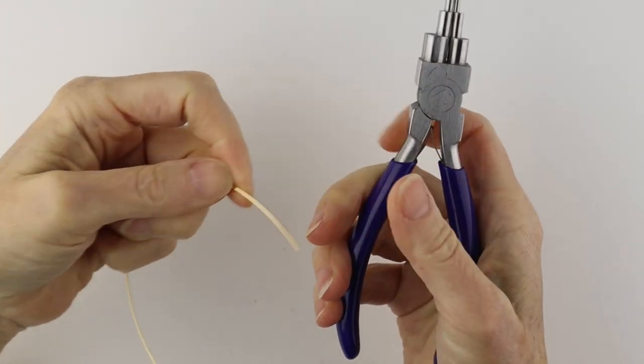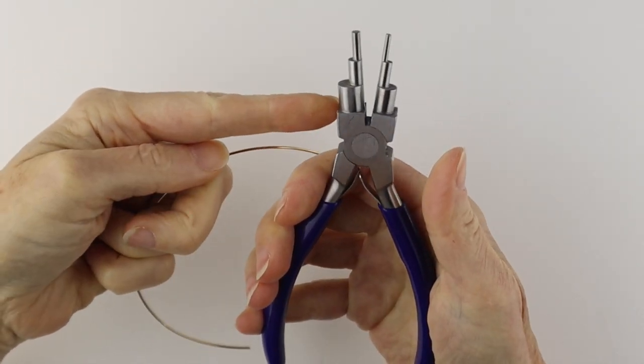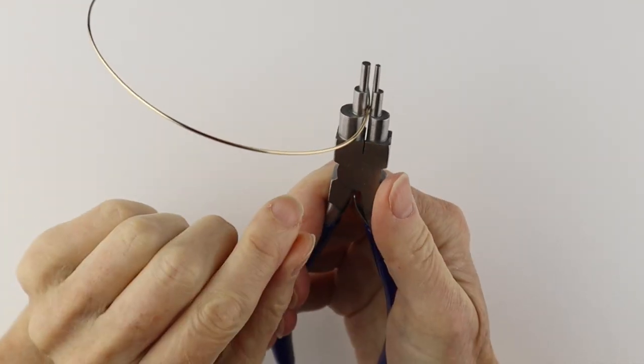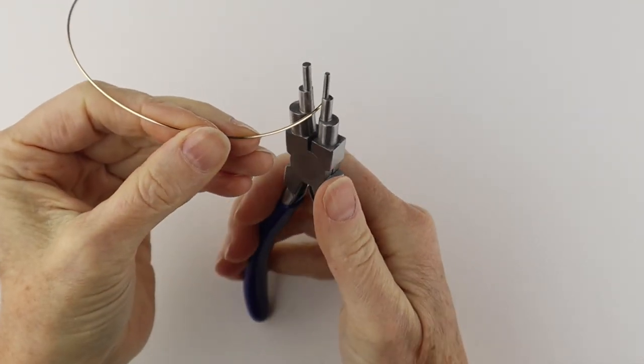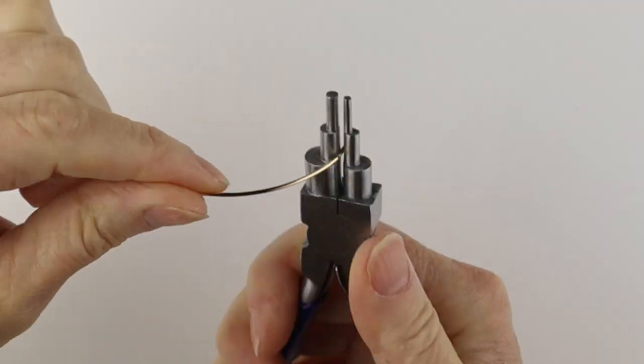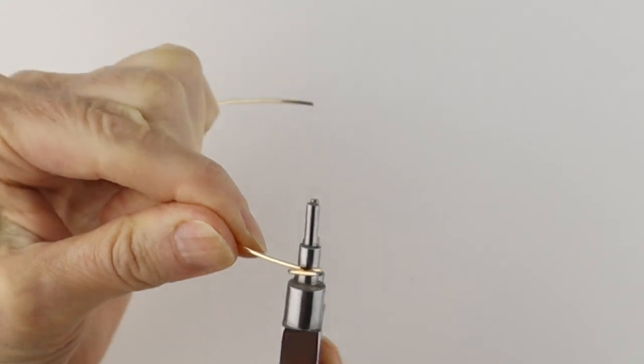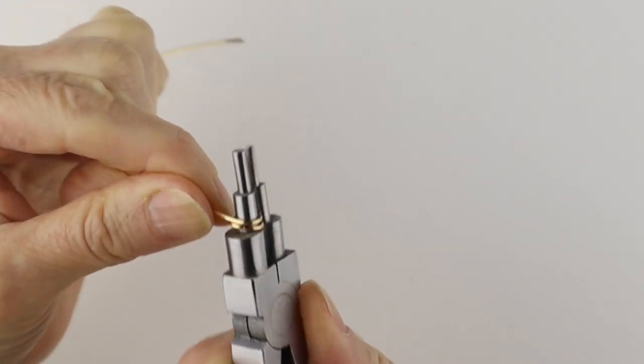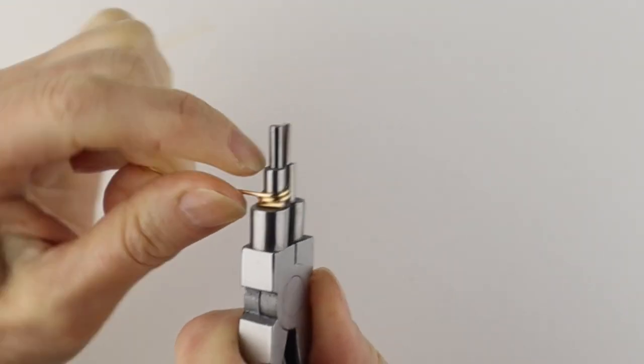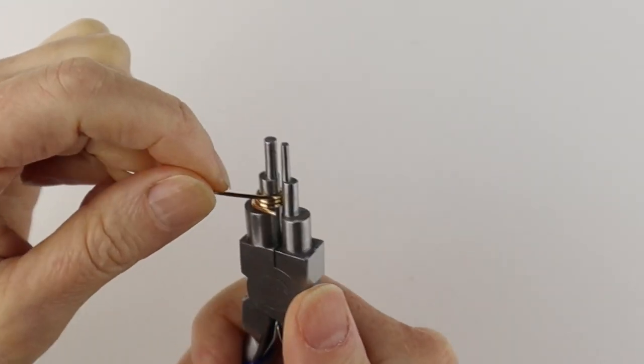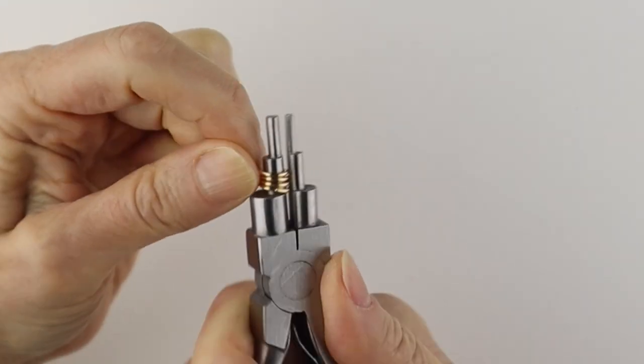If you have a longer piece of wire, you can get these Beadsmith six step looping pliers. Decide what size you want the rings to be. Hold the wire in here and just turn it around, open, close them, and turn it around, and we're just going to fill up this area so we can make a bunch of rings at the same time.